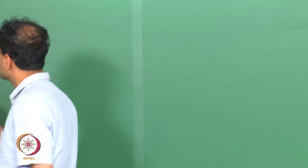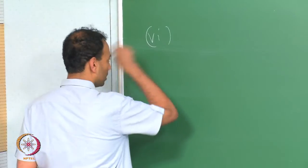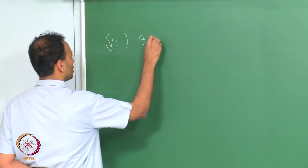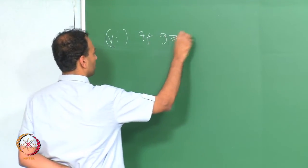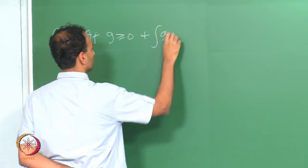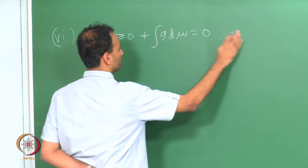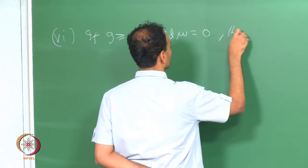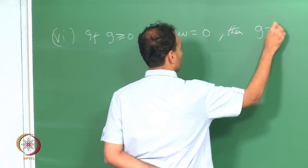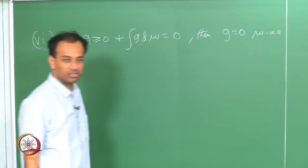We were in the middle of discussing a number of properties. We were discussing property number 6, which said that if g is non-negative and the integral of g d-mu equals 0, then g equals 0 mu-almost everywhere. This is the property we were discussing.